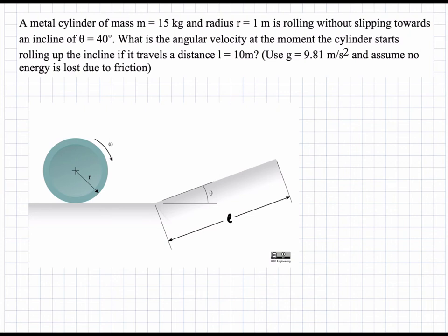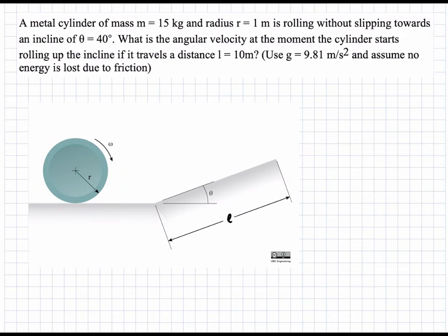In this problem we have a cylinder that is rolling and it hits an incline. It then proceeds to roll up the incline for 10 meters until it stops. We're asked to find what is the initial angular velocity required to achieve this distance. This is a work-energy problem where the kinetic energy at the initial state is converted into potential energy at the final state.